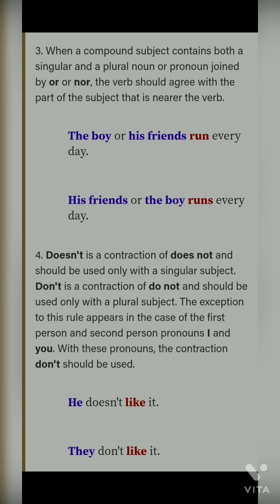Fourth point: 'doesn't' is also known as 'does not' and 'don't' is known as 'do not'. Jo 'does not' hai wo aapka singular subject ke saath lagega — for example: 'he doesn't like it'. Aur jo 'don't' hai wo plural subject ke saath lagega — 'they don't like it'. But agar aapke paas 'I' ya 'you' aa gaya, unke saath hamesha 'don't' hi lagega.